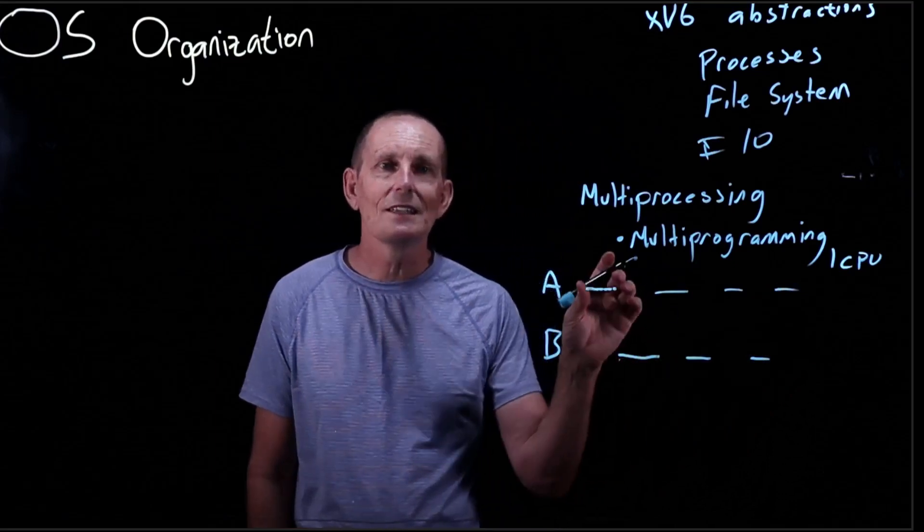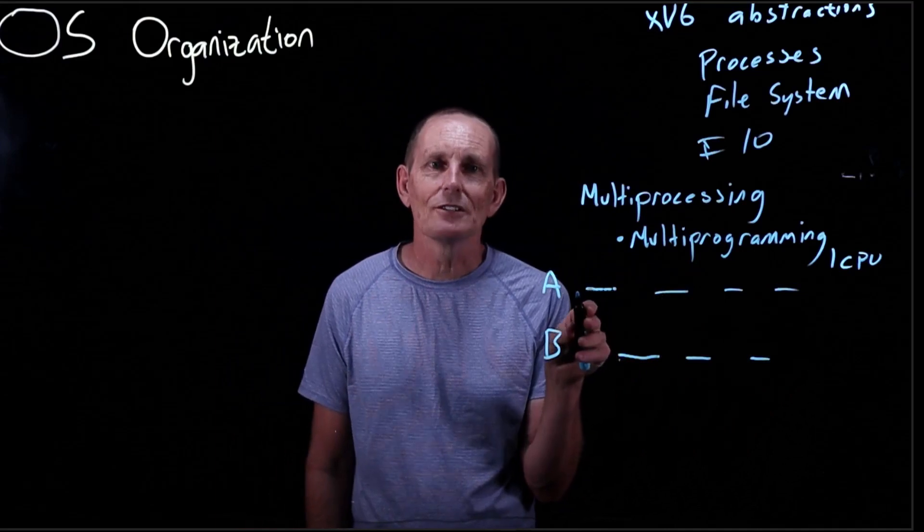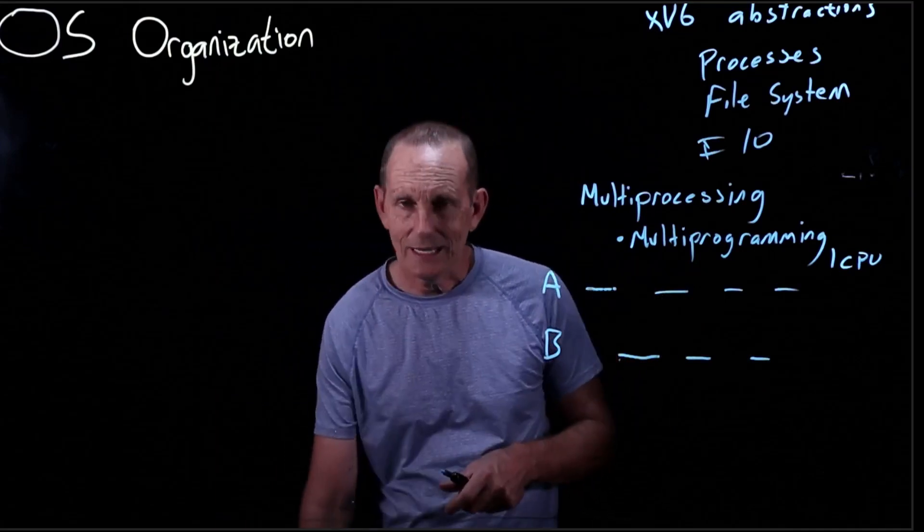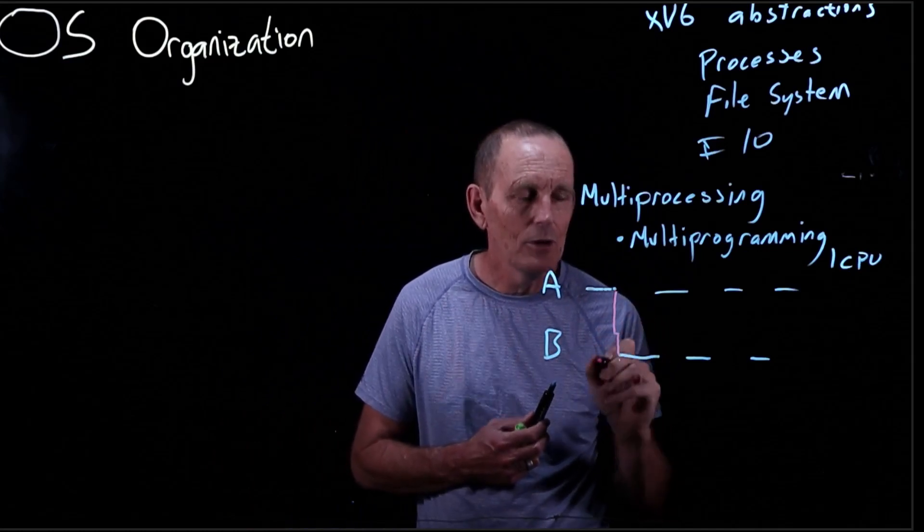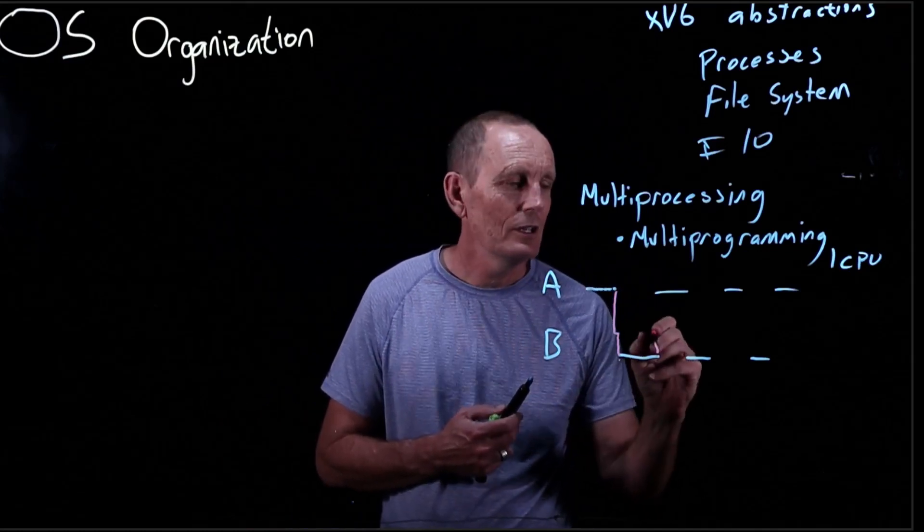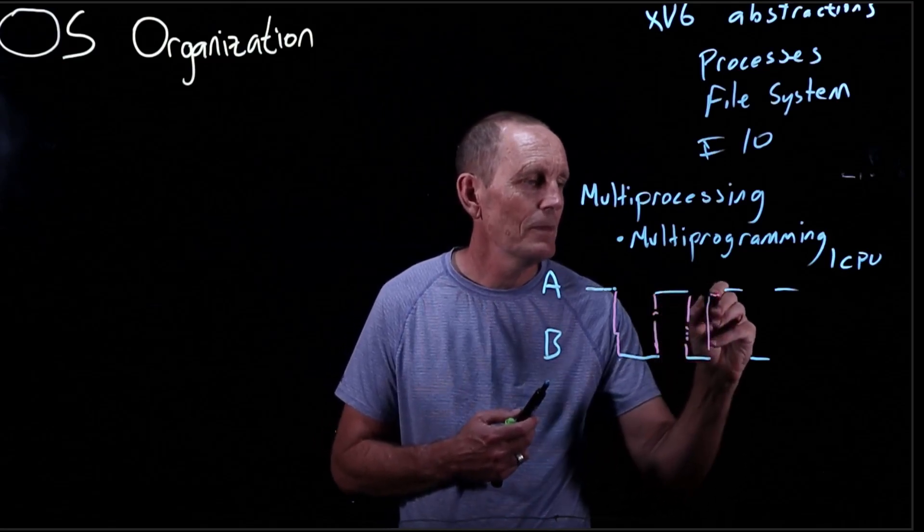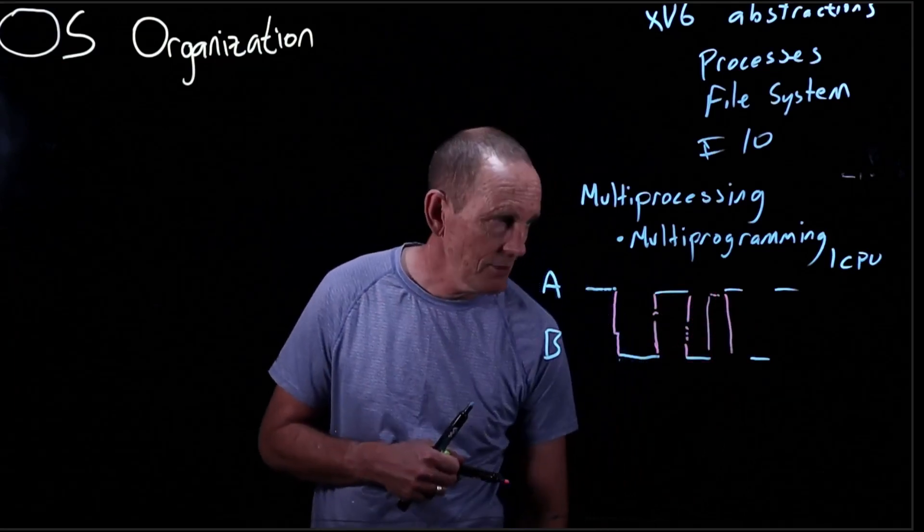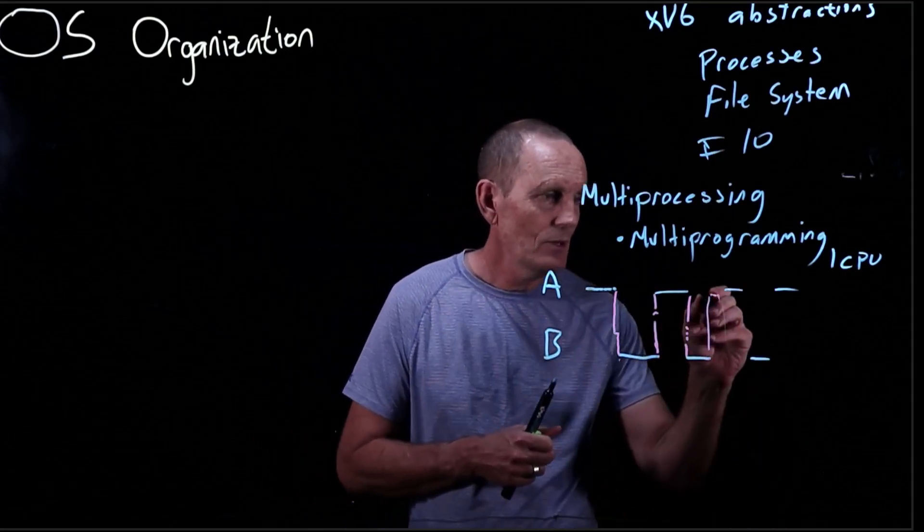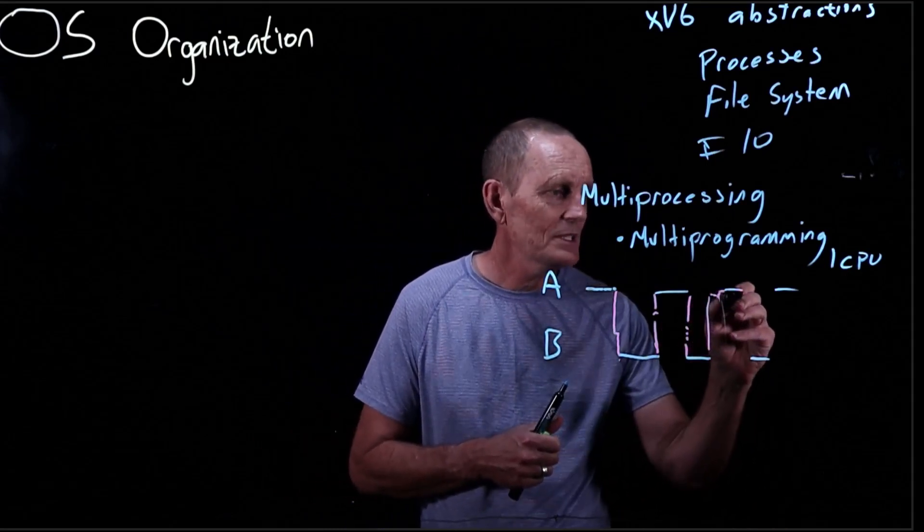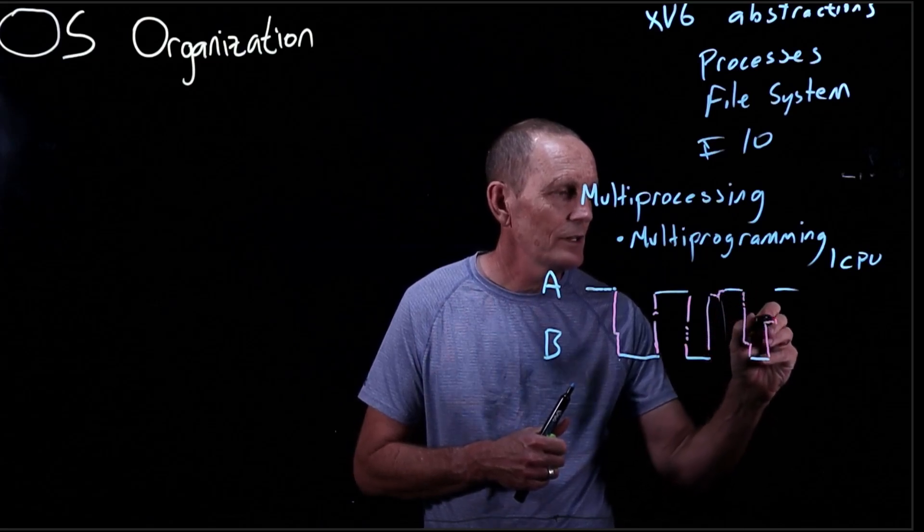This is a single CPU that's switching back and forth. What's actually doing this switching to switch the code from running A to running B? That's actually the operating system. It runs here and runs a little bit of code to do the switching, then runs a little bit of code to do the switching, and so on. It's not all time that's spent in either A or B. Some of the time is spent in overhead to do the switch. So that's multiprogramming.